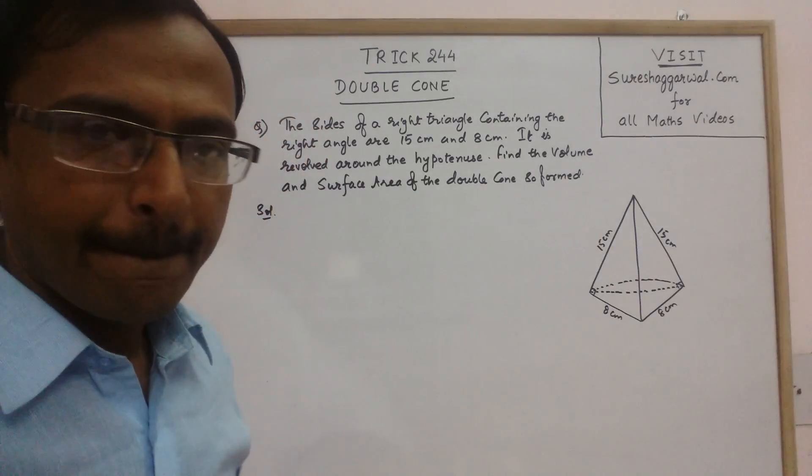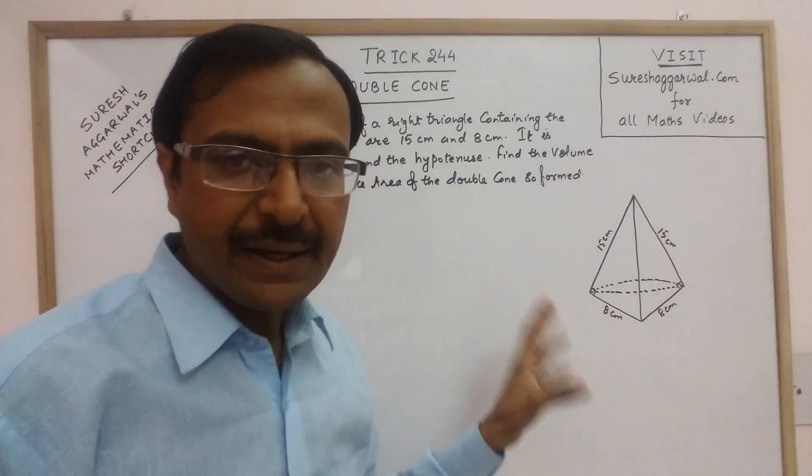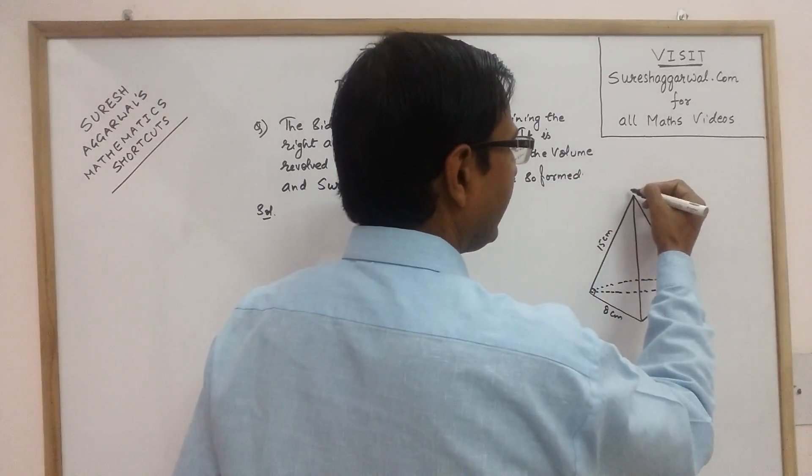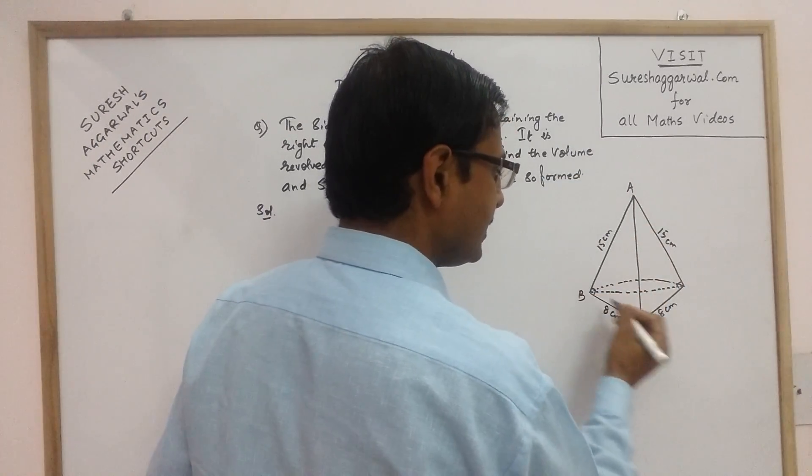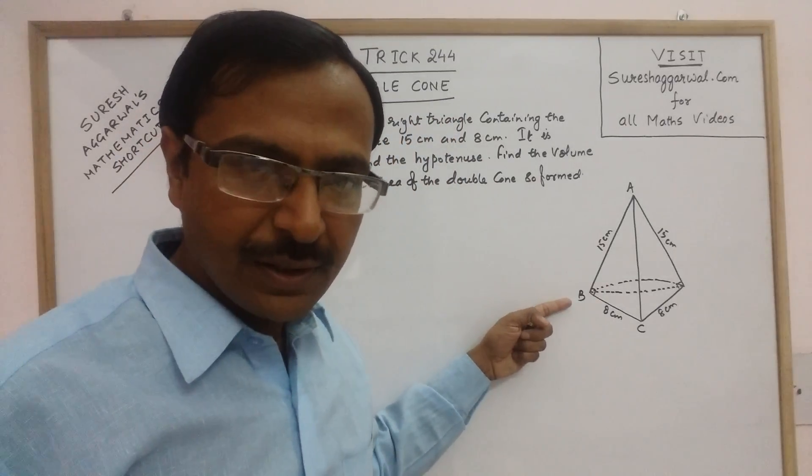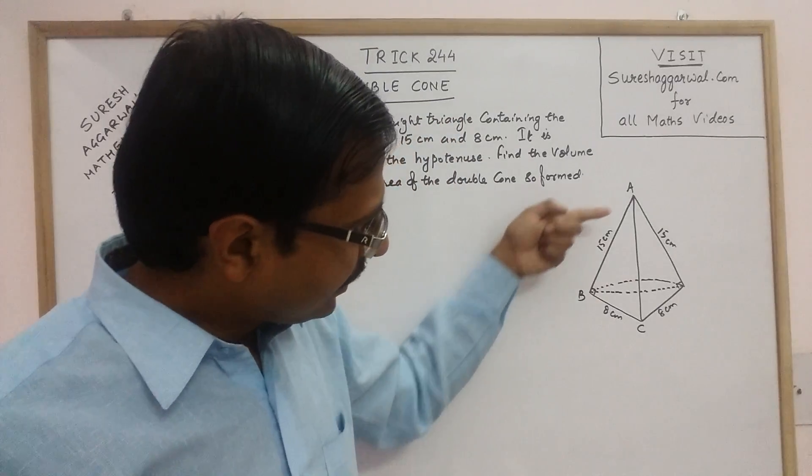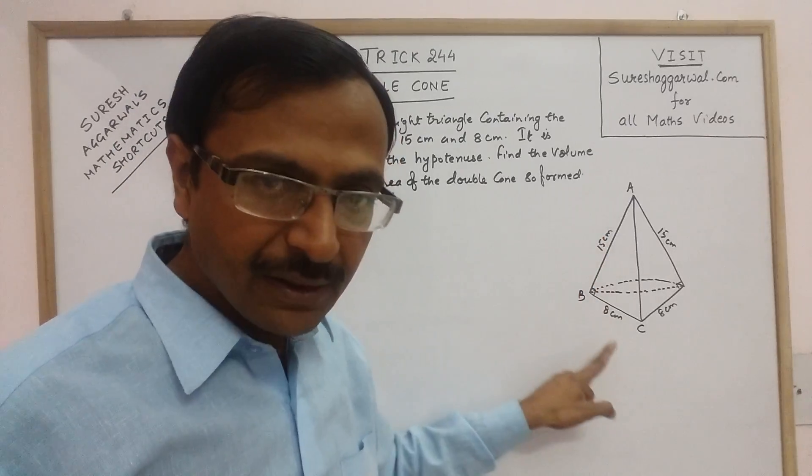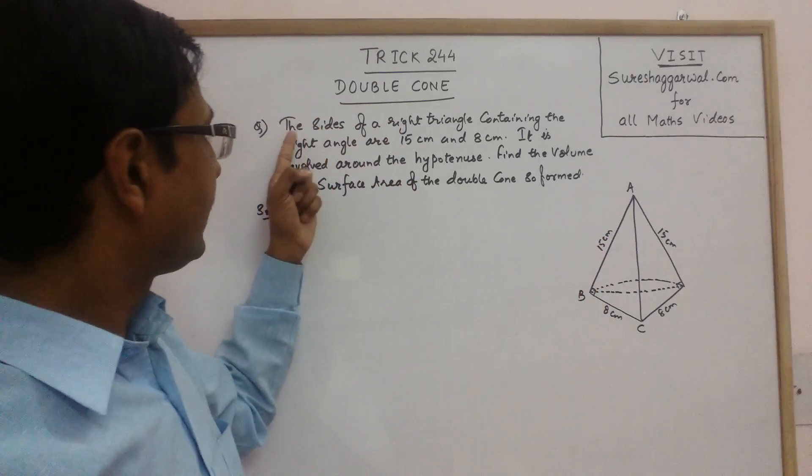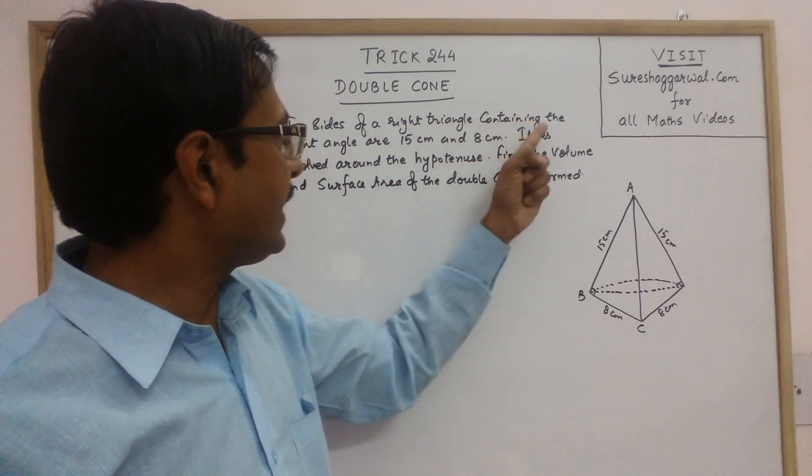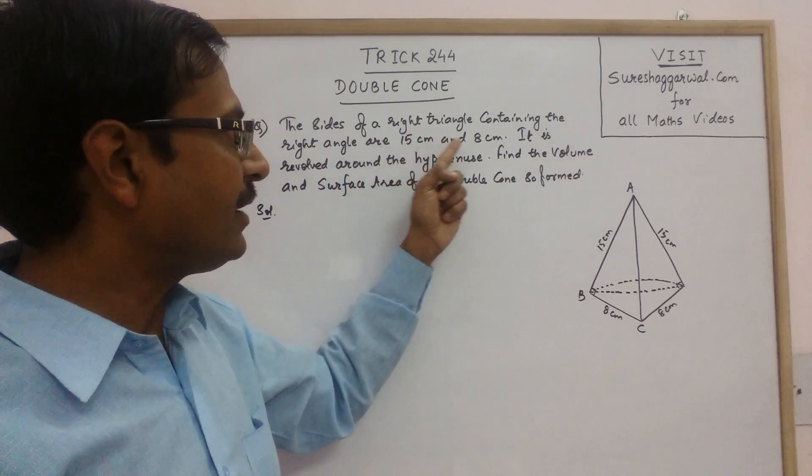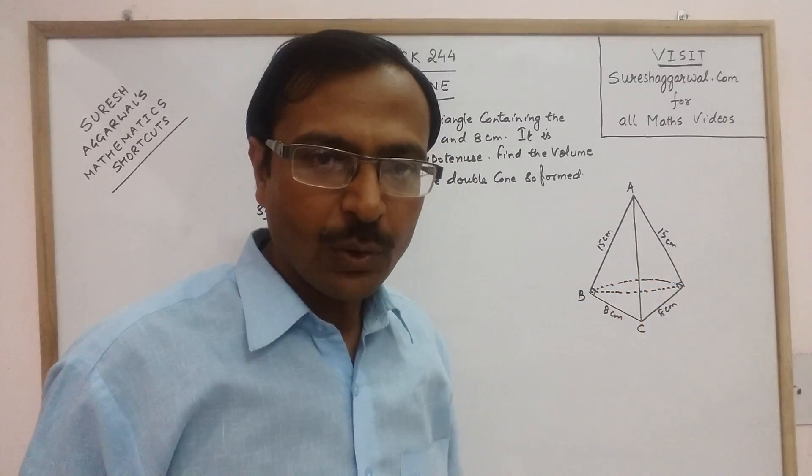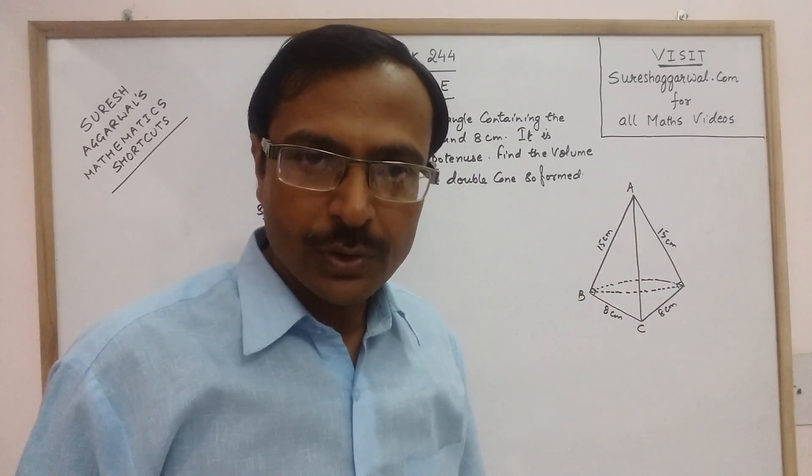Now what is a double cone? See whenever we have a right triangle, here I have a right triangle, say I have labeled it as A, B, C, where angle B is 90 degrees. The two sides which form a right angle are given. Now see, the sides of a right triangle containing the right angle are 15 and 8. So 15, 8 and the hypotenuse we can easily find out by using Pythagorean theorem.